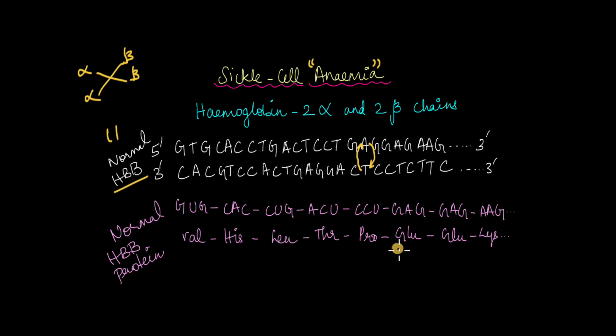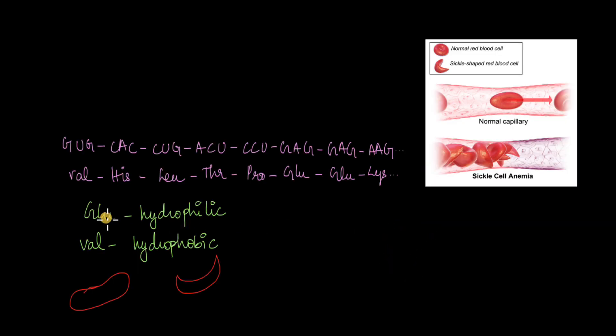Instead of glutamic acid being produced in the 6th position, because of this small mutation, it's going to be replaced with the amino acid valine. Glutamic acid is a hydrophilic amino acid whereas valine is a hydrophobic amino acid.